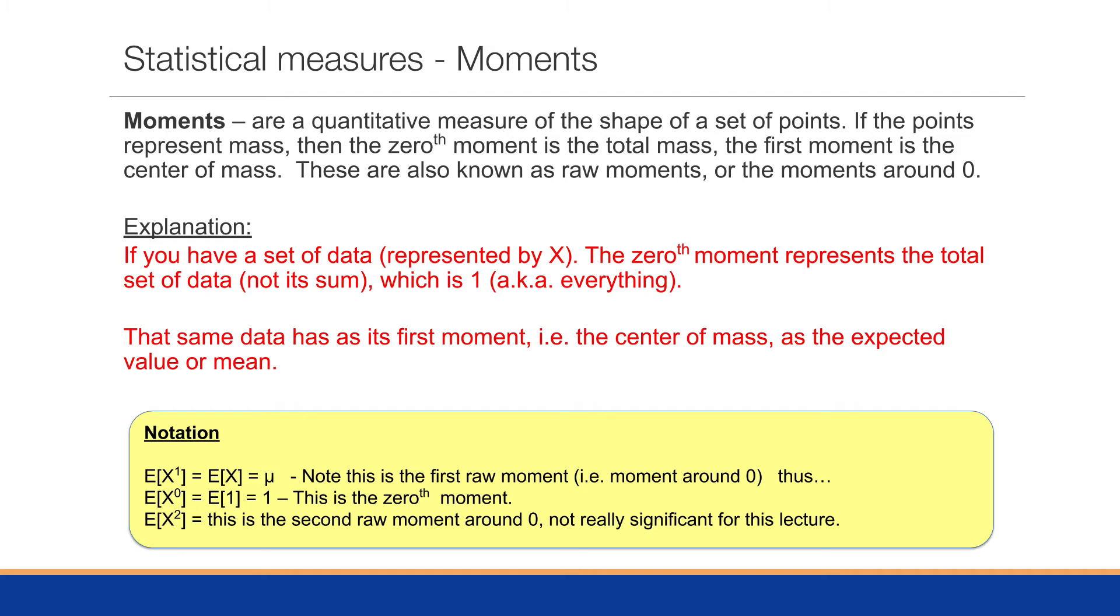Moments are a qualitative measure of the shape of a set of points. This begins the concept of understanding what our data looks like. When we say 'looks like,' it's sometimes nice to look at it in a graph, but we're trying to create a concept of the shape. We'll use different moments to begin to inform us about the overall shape of the data. If the points represent mass, then the zeroth moment is the total mass. The first moment will be the center of mass. These are known as the raw moments or the moments around zero.